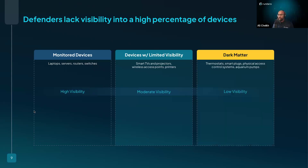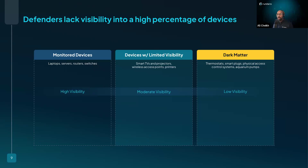The third tier is what we call network dark matter — named after dark matter in cosmology because these devices are ever-present on the network but mostly invisible to IT and security management tools. These include thermostats, smart plugs, and aquarium pumps. They often fade into the background and go unnoticed for years, with updates that are infrequent or non-existent.